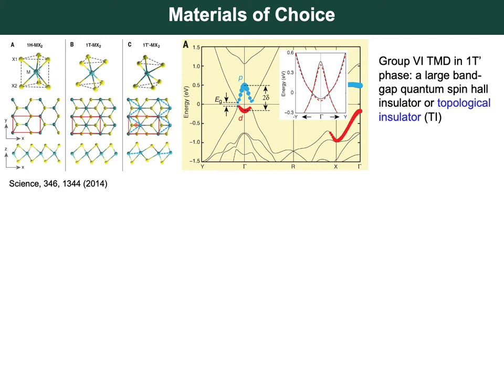We are interested in group 6 TMDs. In the H phase the stacking is ABA — this is a semiconducting phase. In the T phase the stacking is ABC — this is a metallic phase, but the T structure is typically not stable in freestanding form; it undergoes spontaneous lattice distortion into the T-prime structure. The distorted metal ions in the T-prime structure form one-dimensional zigzag chains, and at the gamma point an inverted band gap opens, with conduction and valence bands inverted. T-prime TMDs have been demonstrated to be topological insulators, meaning the bulk is insulating but conducting edge states are topologically protected from backscattering by time-reversal symmetry.